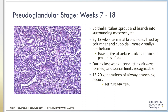The developing lung enters the pseudoglandular phase between weeks 7 and 18. During this stage, epithelial tubes sprout and branch into the surrounding mesenchyme. By 12 weeks gestation, terminal bronchioles are lined by columnar epithelium and more distally by cuboidal epithelium. These cells have epithelial surface markers and do not produce surfactant. By the end of this stage, the conducting airways have formed and the acinar limits are recognizable, with between 15 and 20 generations of airway branching having occurred under the regulation of factors such as FGF-7, FGF-10, and TGF-alpha. This image shows the histologic hallmarks of the pseudoglandular phase, including multiple levels of airway branching, with the entire air-conducting bronchial tree formed up to the level of the terminal bronchioles.